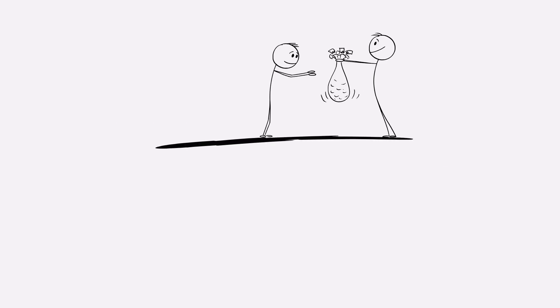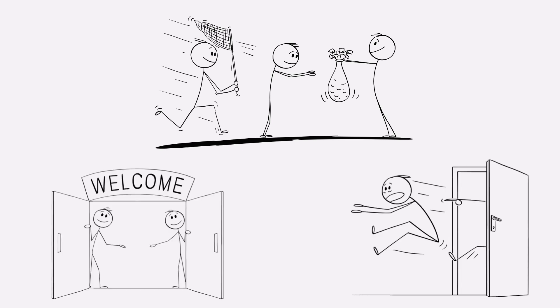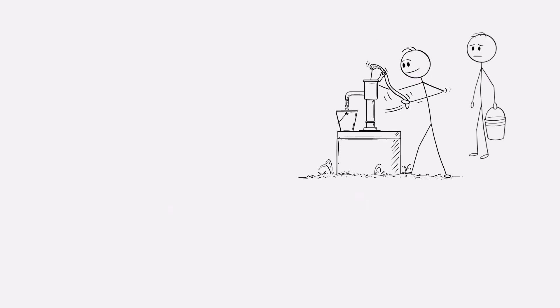Always aim to cooperate and reward cooperation from others, but if betrayed, respond firmly and proportionately, and quickly return to cooperation as soon as the other side does. This balance makes it one of the most successful strategies ever studied in repeated games. It encourages trust, discourages exploitation, and keeps relationships fair.